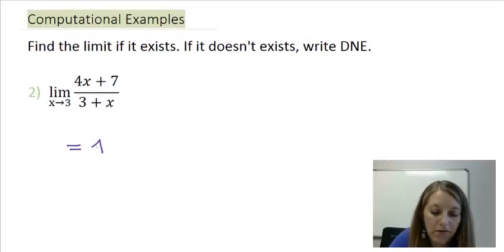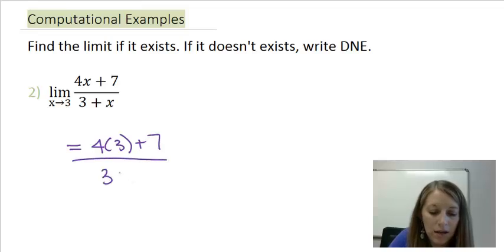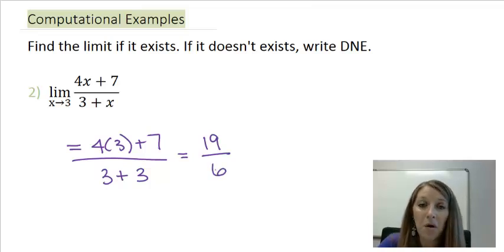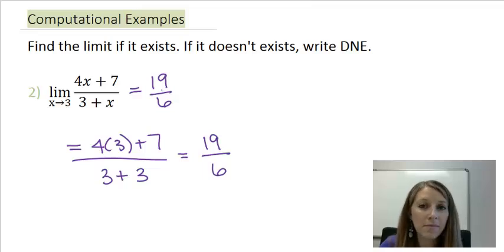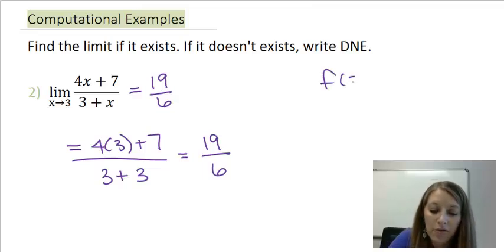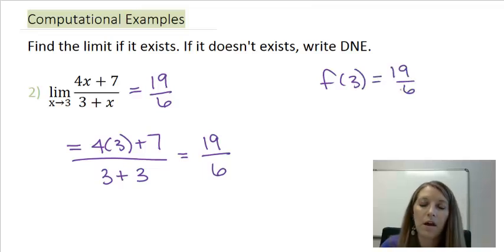This gives me 4 times 3 plus 7 over 3 plus my x value of 3. On the top, 12 plus 7 gives me 19. On the bottom, 3 plus 3 gives me 6. I didn't have any problems happening in this example, so therefore I have my actual answer: 19 over 6. Since there were no problems, this is the same thing as finding my function of 3, and it would also be the exact same thing here.